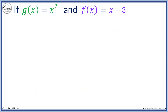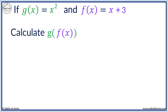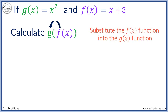Last time we found f of g of x. This time we will calculate g of f of x. The order of composite functions matters. We use the backwards arrow to help us. Here, f of x is substituted into g of x. We substitute the f of x function into the g of x function, so we start with the g of x function, which is x squared.